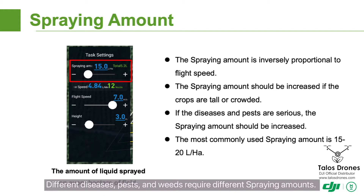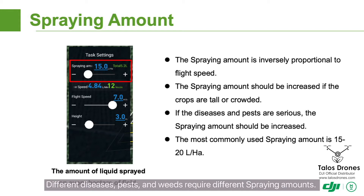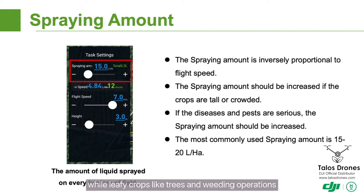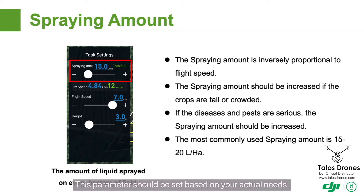Different diseases, pests, and weeds require different spraying amounts. Generally, short crops and preventative operations require low spraying amounts, while leafy crops like trees and weeding operations require higher spraying amounts. This parameter should be set based on your actual needs.